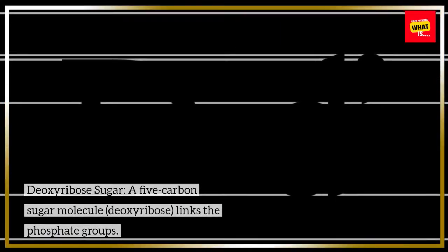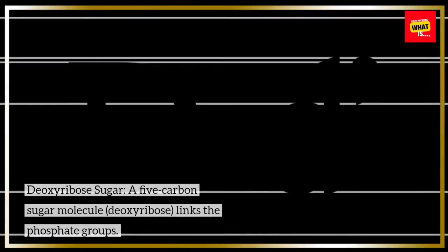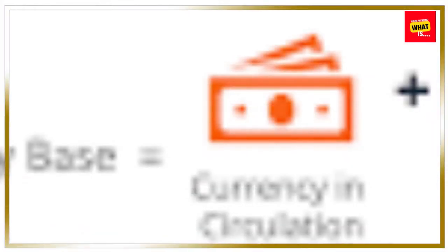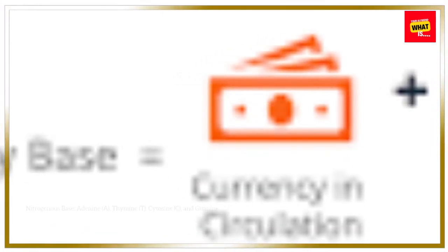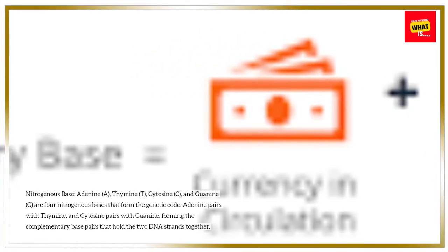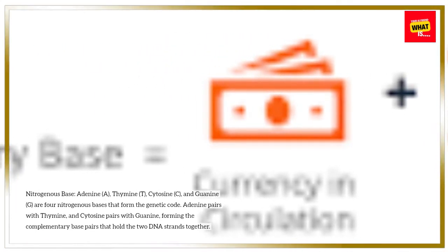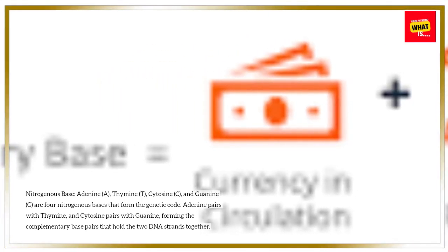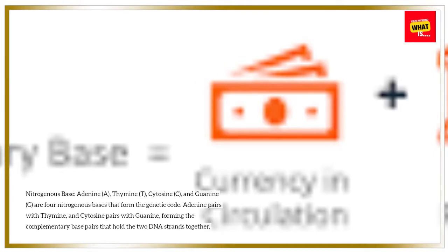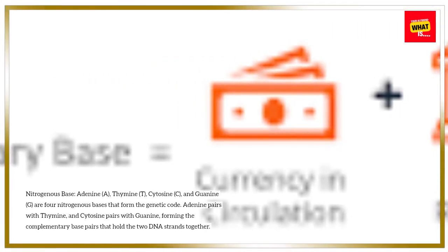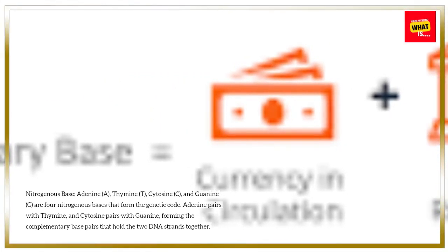Deoxyribose sugar: a five-carbon sugar molecule, deoxyribose, links the phosphate groups. Nitrogenous base: adenine (A), thymine (T), cytosine (C), and guanine (G) are four nitrogenous bases that form the genetic code. Adenine pairs with thymine, and cytosine pairs with guanine, forming the complementary base pairs that hold the two DNA strands together.